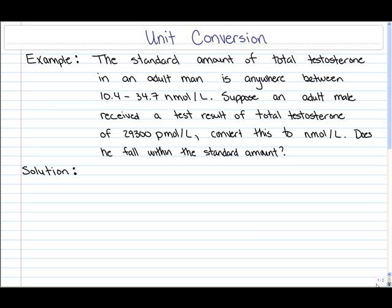Here the standard amount of total testosterone in an adult man is anywhere between 10.4 to 34.7 nanomoles per liter. Suppose an adult male received a test result of total testosterone of 29,300 picomoles per liter. Convert this to nanomoles per liter and does he fall within the standard amount?